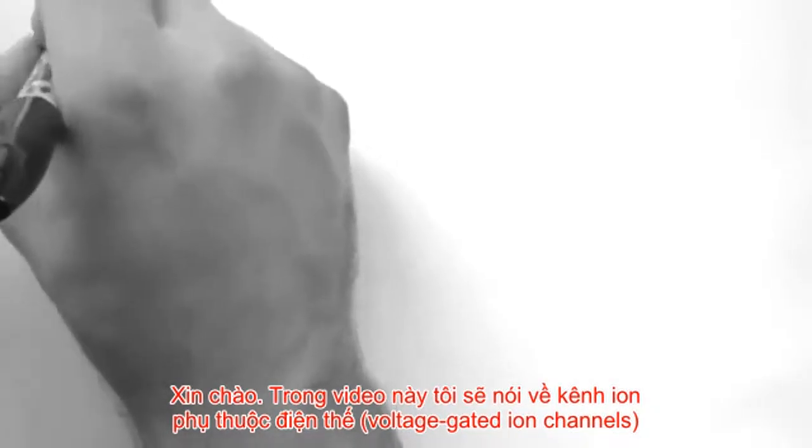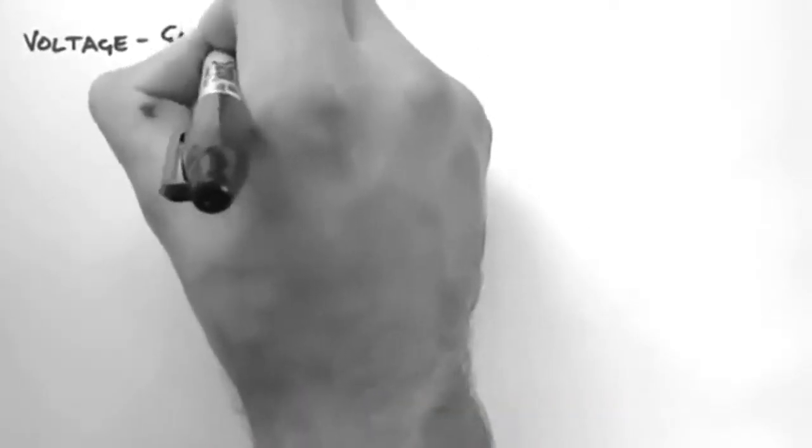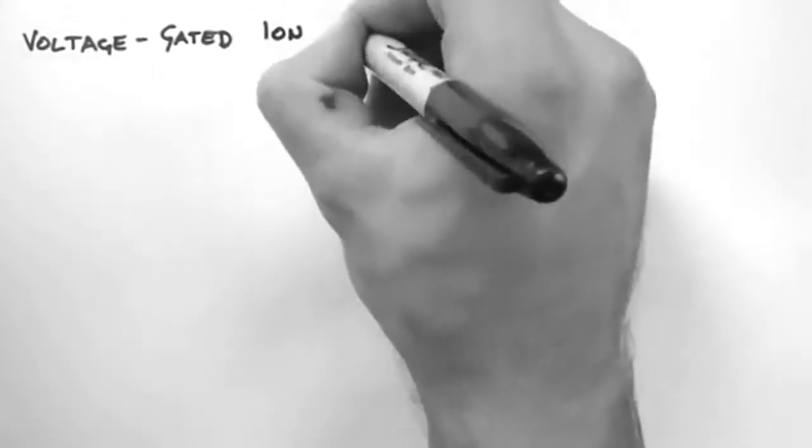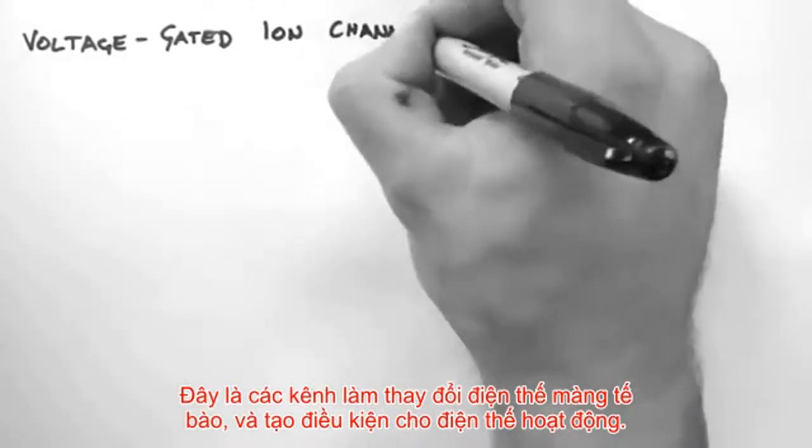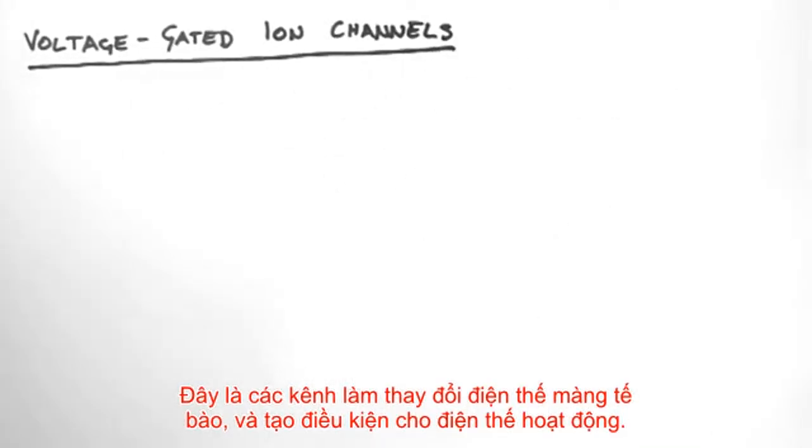Hi, in this video I'm going to talk about voltage-gated ion channels. These are the channels which change the membrane potential and thus allow an action potential.